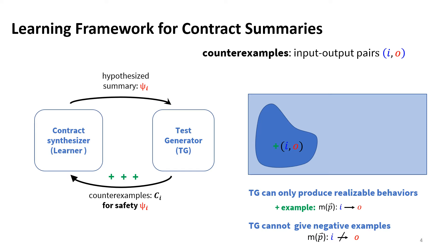However, it turns out that the test terminator cannot report negative behaviors. This makes the learning problem different from standard supervised learning of classifiers and different from precondition synthesis in my earlier work. Notice that when we repeat this loop and converge, we are guaranteed to find a safe contract — a contract summary modulo the test terminator. But the problem with this framework is that it allows for very weak summaries when we actually need strong ones.